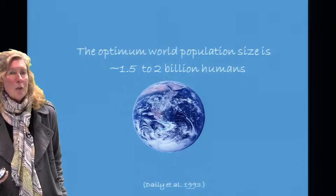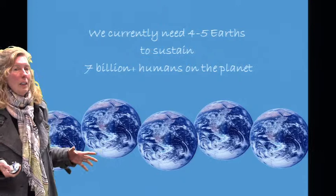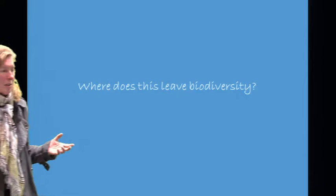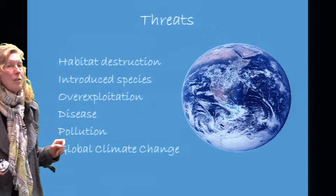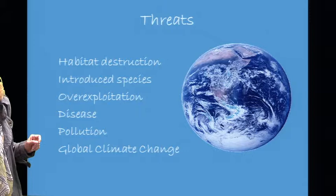It has been proposed that our optimum world population size is approximately 1.5 to 2 billion humans. If this were the case, we would currently need 4 to 5 planet Earths to sustain our 7 billion humans. So where does this leave biodiversity? Threats to biodiversity include habitat destruction, introduced species, overexploitation, disease, pollution, and global climate change.